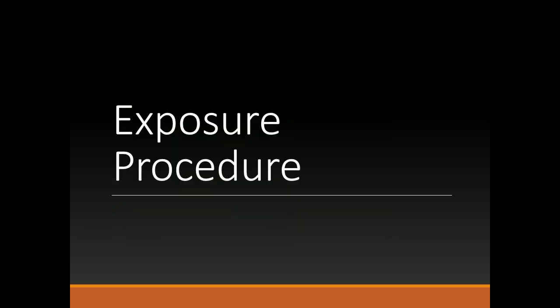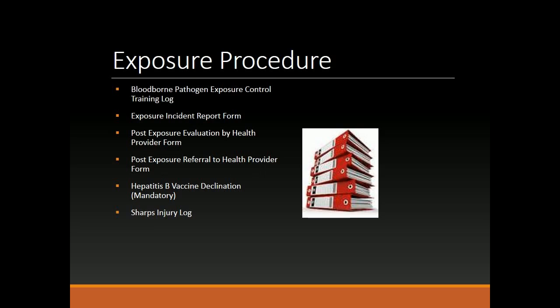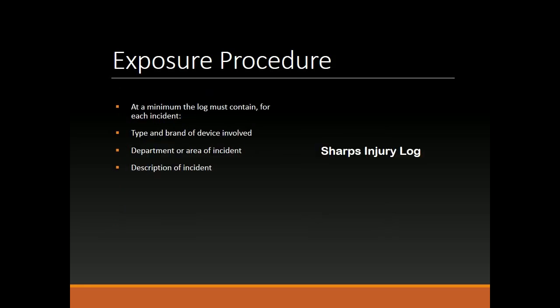Exposure Procedure. Required documentation includes: the Bloodborne Pathogen Exposure Control Training Log, Exposure Incident Report Form, Post-Exposure Evaluation by Health Provider Form, Post-Exposure Referral to Health Provider Form, Hepatitis B Vaccine Declination (mandatory), and a Sharps Injury Log. At a minimum, the Sharps Injury Log must contain, for each incident: type and brand of device involved, department or area of incident, and description of incident.